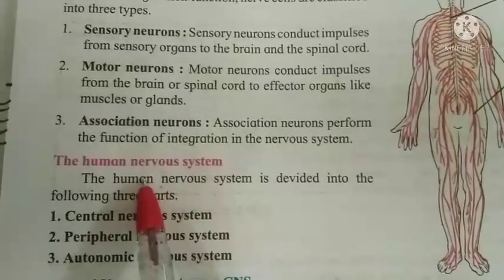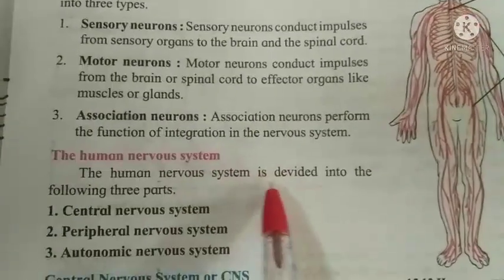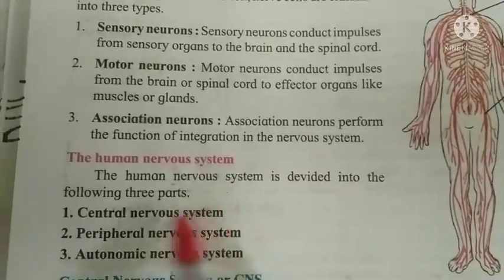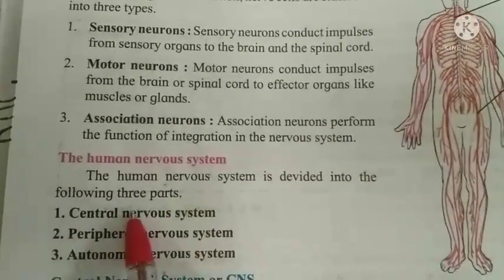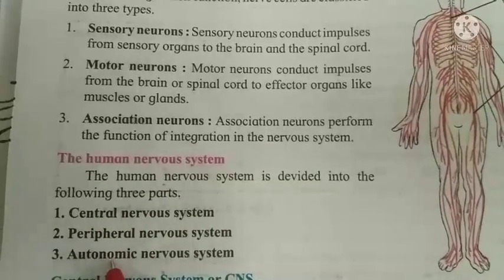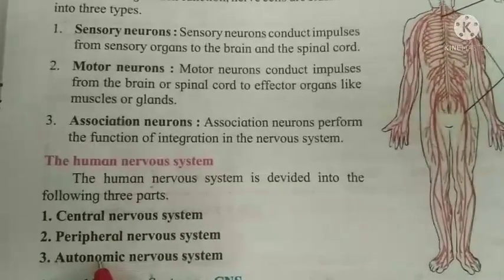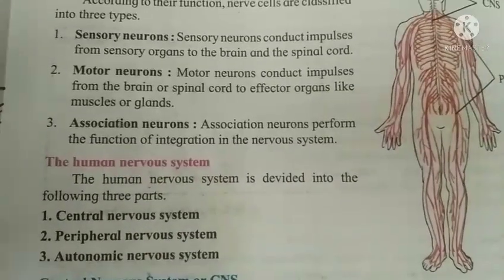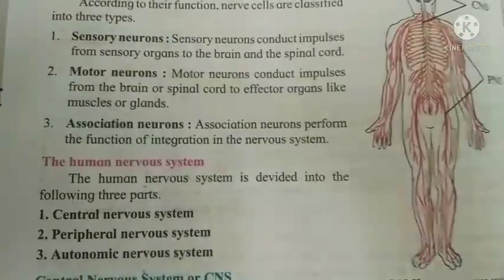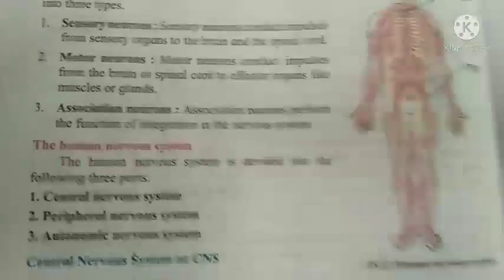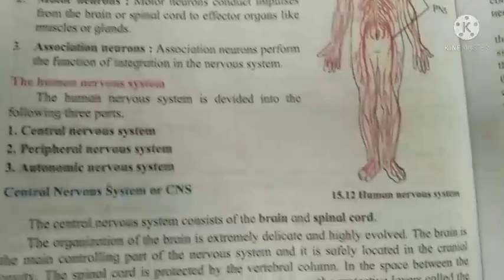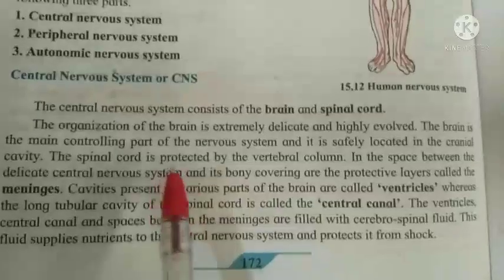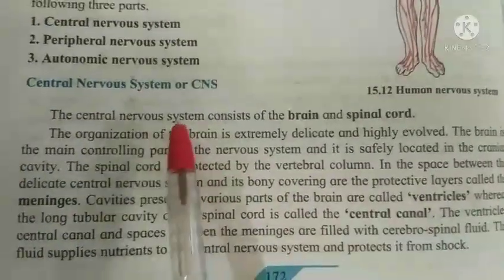The human nervous system can be divided into three different parts: central, peripheral, and autonomic. This is about Activity Number 7. Now, next is Activity 8, which deals with the central nervous system.